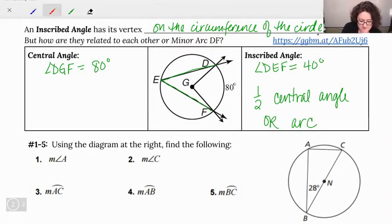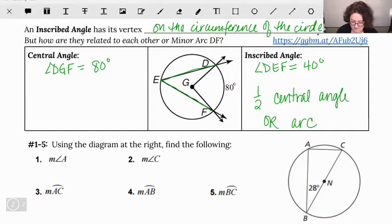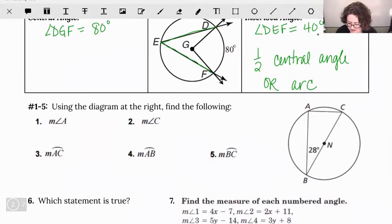Examples one through five, we're looking at our diagram. The first thing that I'm noticing is angle A. If I go ahead and trace out the sides, that's actually cutting off this diameter. In other words, it's cutting off half a circle. So that means half a circle, well, we know that's 180 degrees. The inscribed angle is always going to be half of that. So what's half of 180? That's 90 degrees.